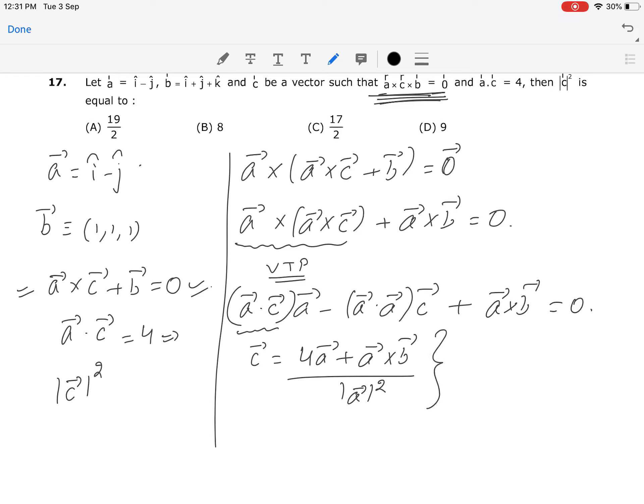We have been provided with what vector a and vector b are. These values can all be substituted. After substituting all values of a vector and b vector, if you calculate c vector squared, it will come out to be 19 divided by 2, which makes option A correct.